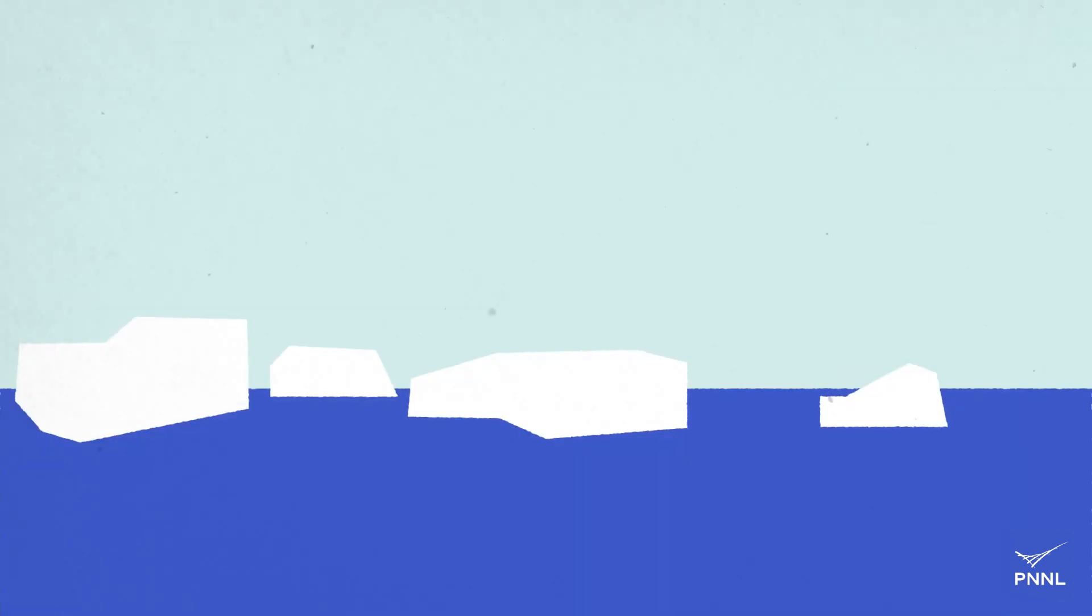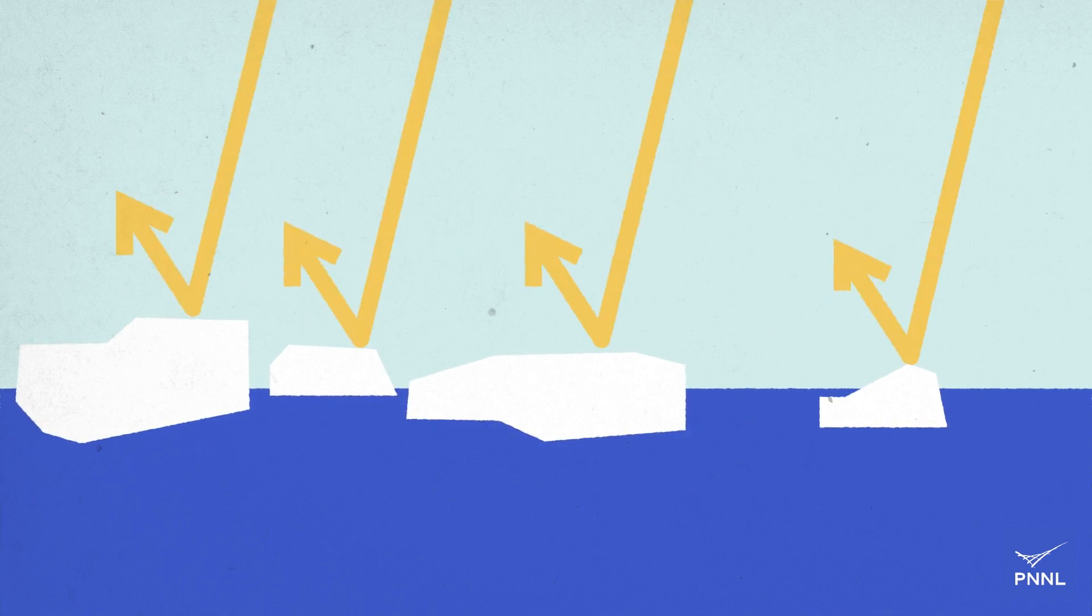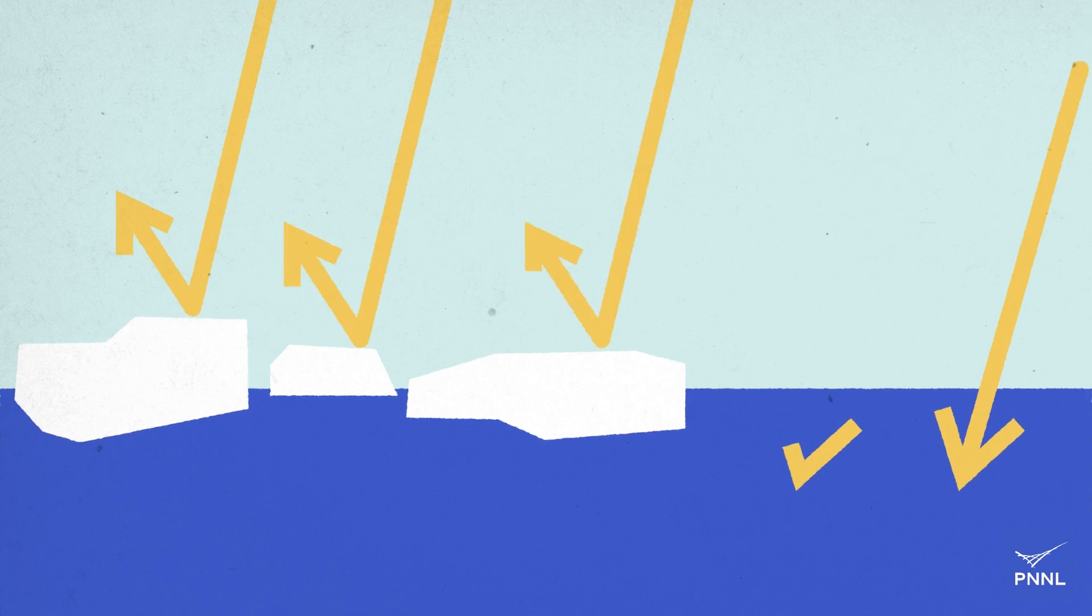As Arctic sea ice melts, more and more sunlight reaches the water's surface. Typically, some of this light is reflected by the ice's bright, shiny surface. But as sea ice continues to shrink, that sunlight has nowhere to go but into the water, where it's absorbed and it generates heat.